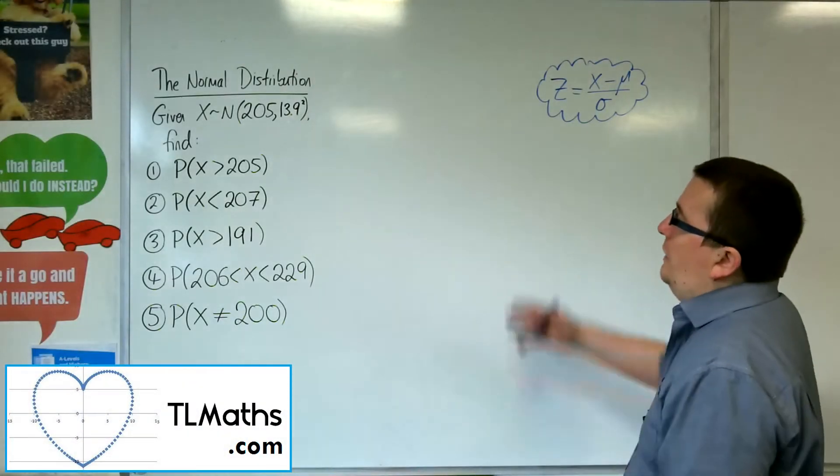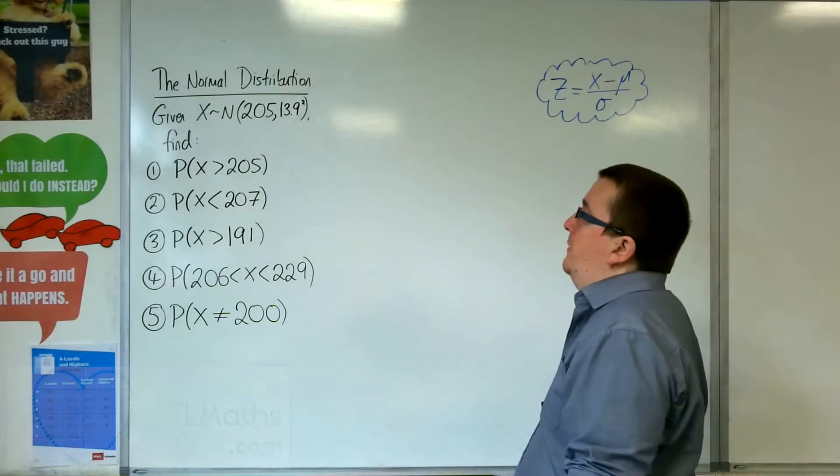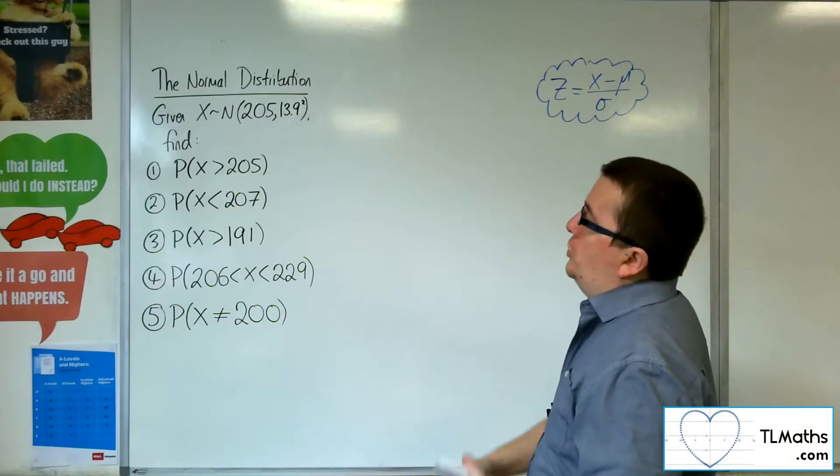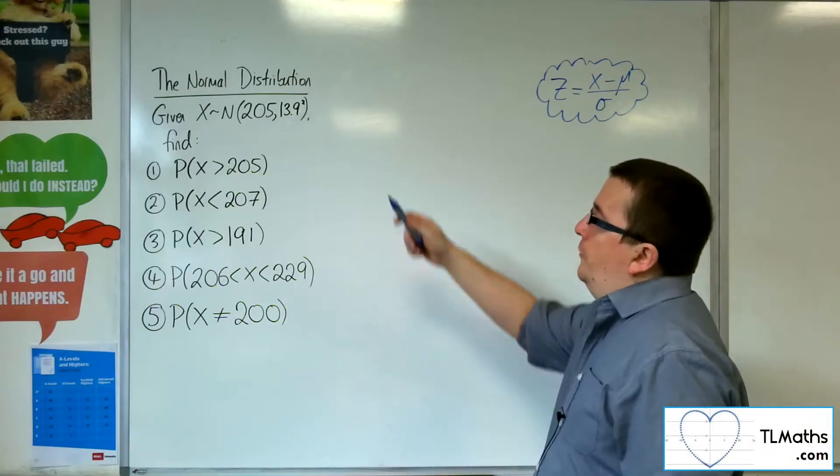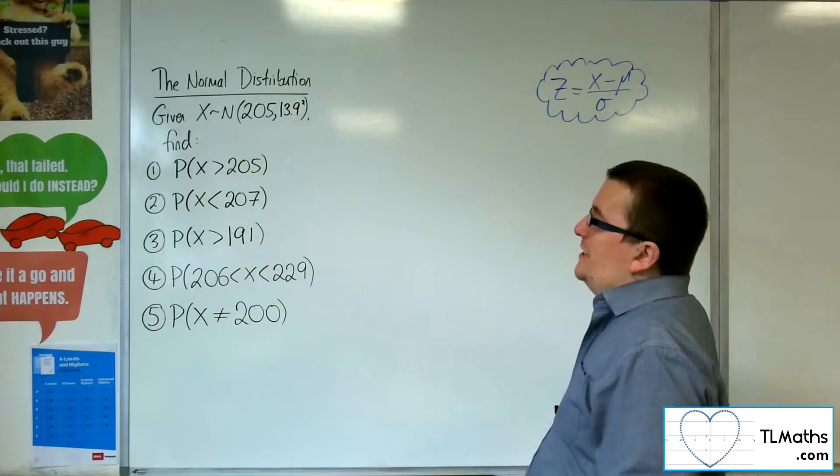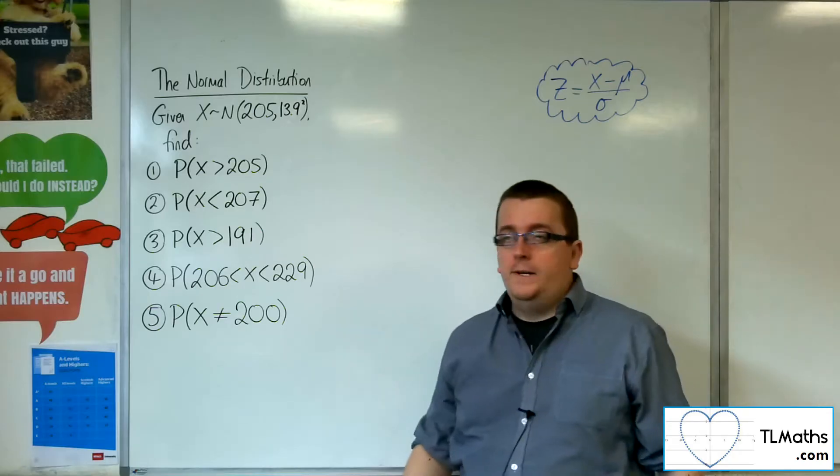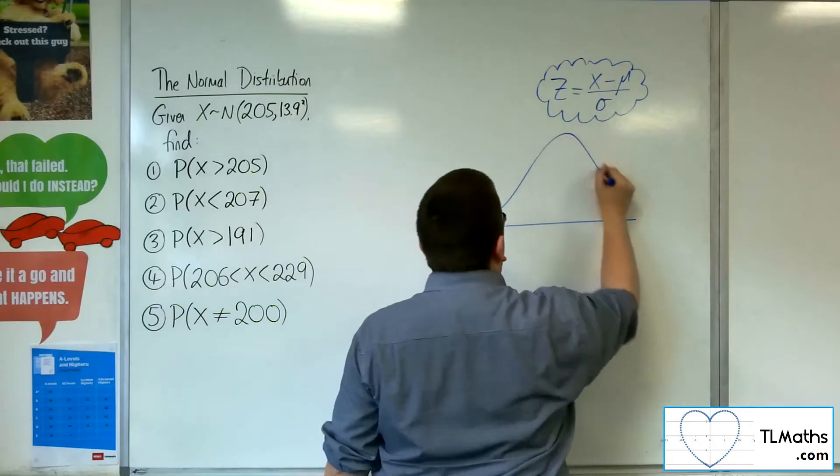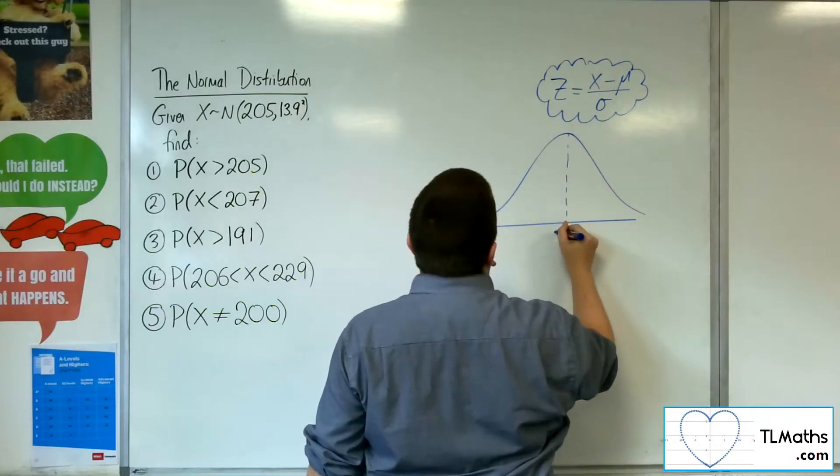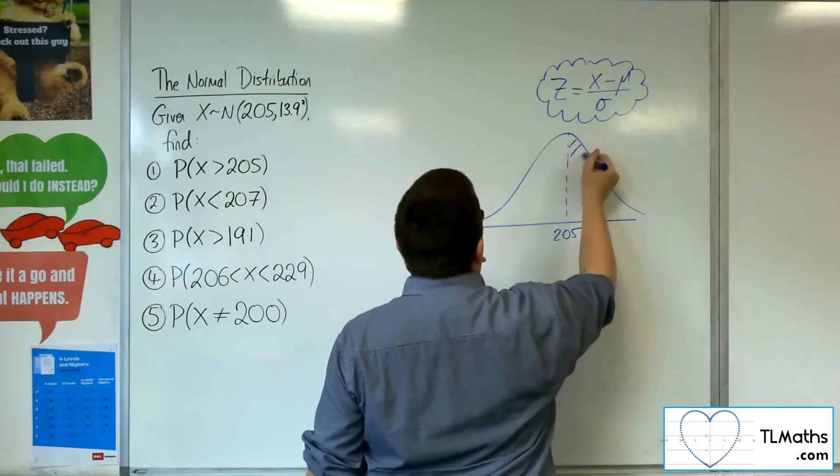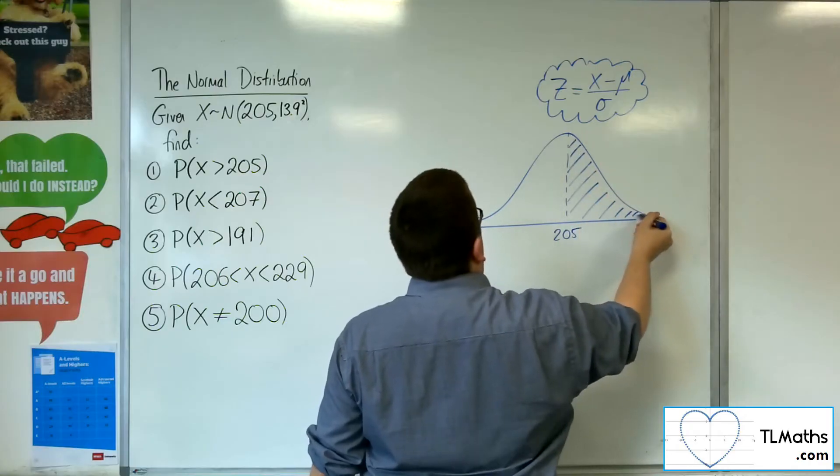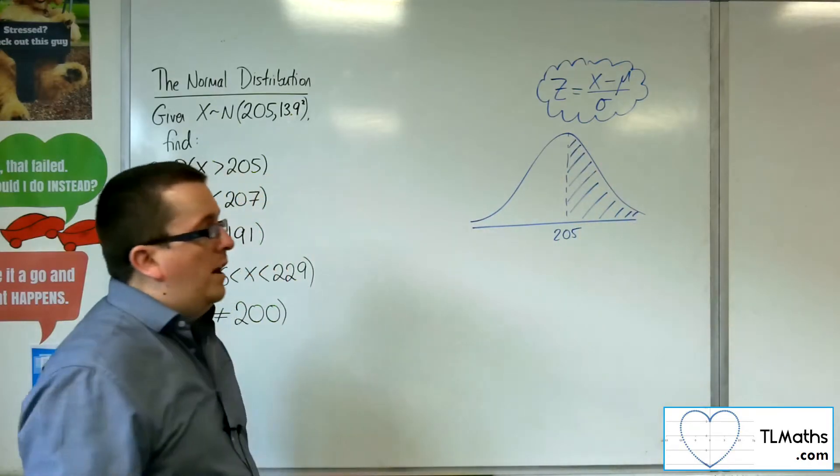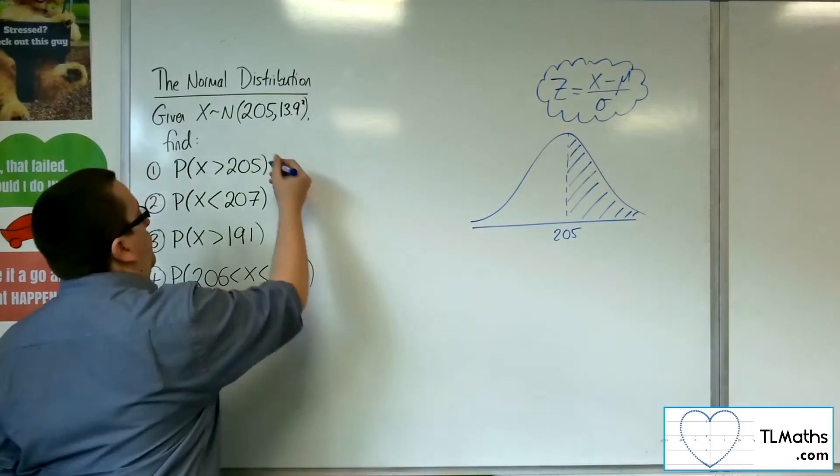In this video we've got X being normally distributed with a mean of 205 and a standard deviation of 13.9. The first question asks me to find the probability that X is greater than 205. In drawing a diagram that's very easy to see, we had a similar problem in the previous video. So if the mean is 205, I want to find that probability, then that probability is half of my diagram. So the probability is 0.5.